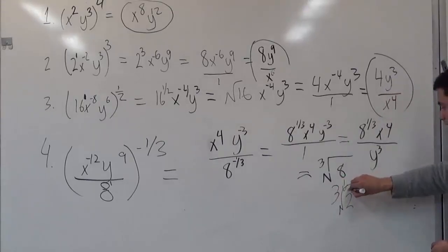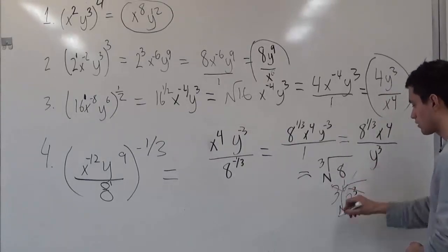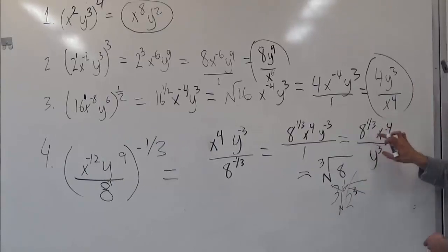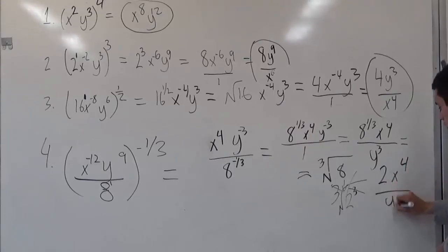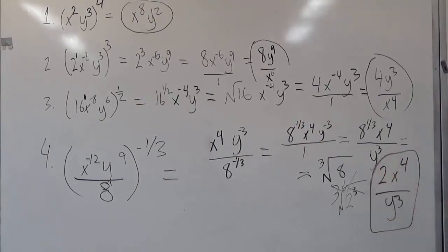So in turn, the 3 cancels out, leaving the radical to cancel out. And this 8 to the 1 third can then become 2x to the fourth over y to the third, which is our final answer.